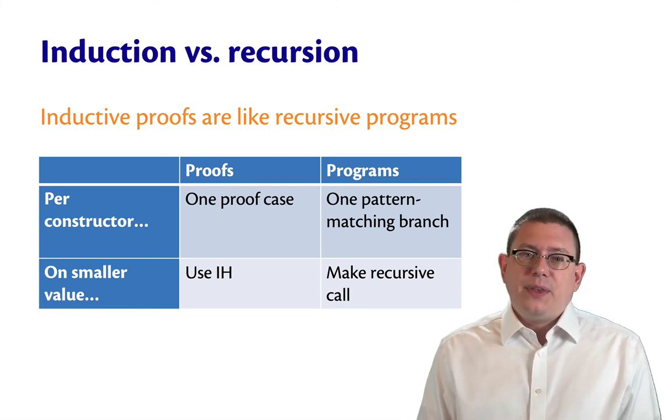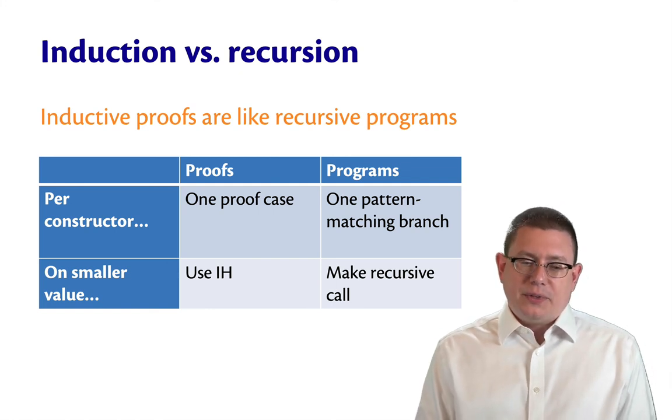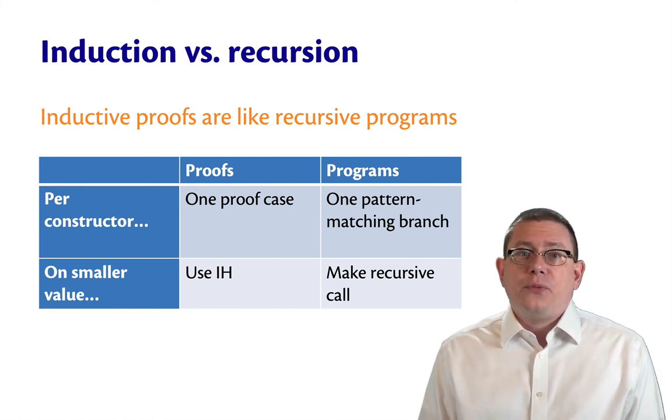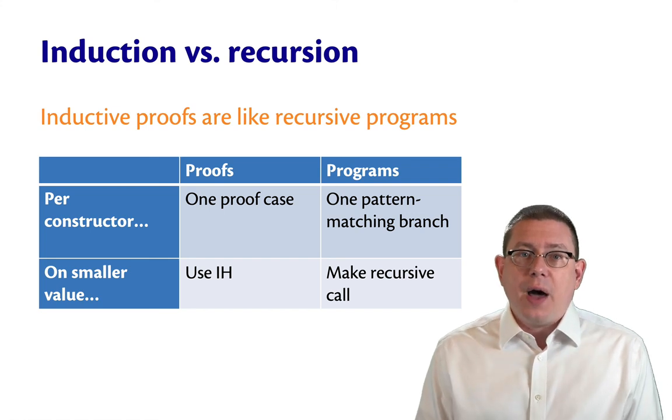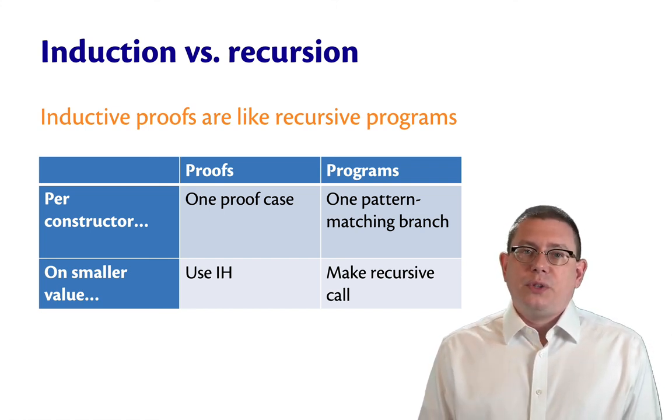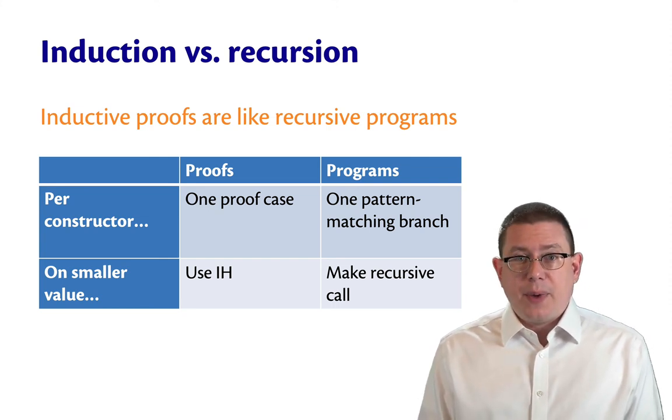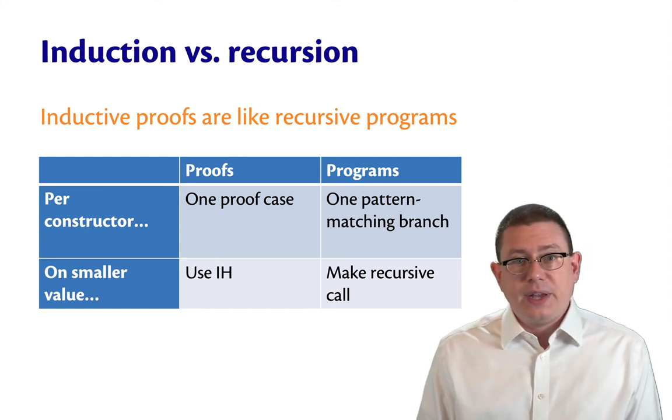Likewise, think about what we do for smaller values of data types. In a proof, we got one inductive hypothesis per smaller value that was involved. So for lists, we got one inductive hypothesis on the tail. For trees, we got two inductive hypotheses, one for the left and one for the right side.